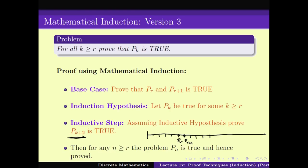In this video we look at a third version. The statement is again that for all k ≥ R, we want to prove Pk is true. But now we start with a different base case: both Pr and Pr+1 are true. The induction hypothesis is the same, but the inductive step is what makes it very interesting — it says that assuming Pk is true for some k proves that Pk+2 is true. Note it is no longer Pk+1 but Pk+2.